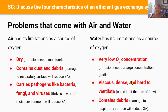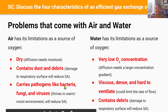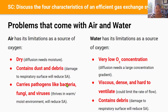Now let's compare the problems that come with air and water as oxygen sources. Air is dry, and diffusion absolutely needs moisture for gases to dissolve into first. Air also contains dust and debris that could damage the respiratory surface, reducing surface area. Additionally, air carries pathogens like bacteria, fungi, and viruses, which thrive in the warm and moist environments of gas exchange systems like lungs. If infections happen, these will damage the lungs and reduce surface area.